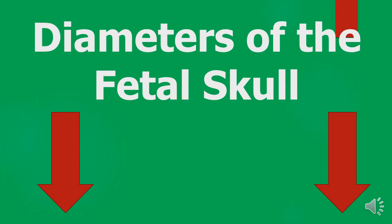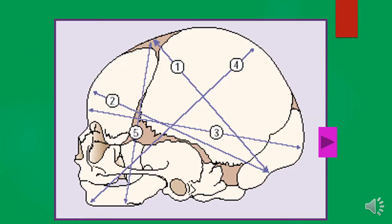Welcome to another exciting lecture. Today I'm going to focus on the diameters of the fetal skull. My name is Kamwendo Urodi. When we talk of the diameters of the fetal skull, we are talking of about six diameters: the suboccipital bregmatic, suboccipital frontal, the occipital frontal, mental vertical, submental bregmatic, and submental vertical.